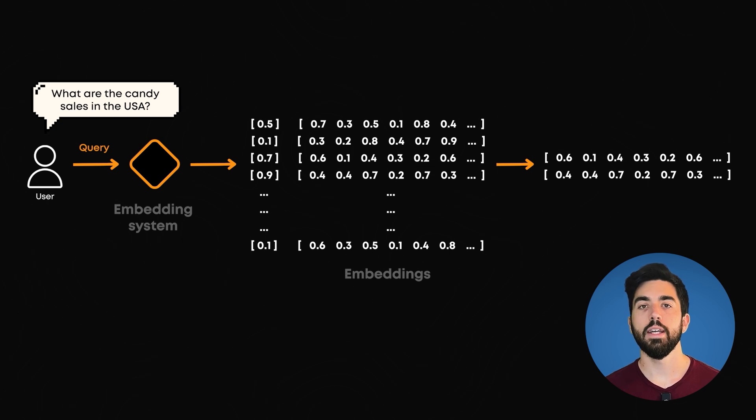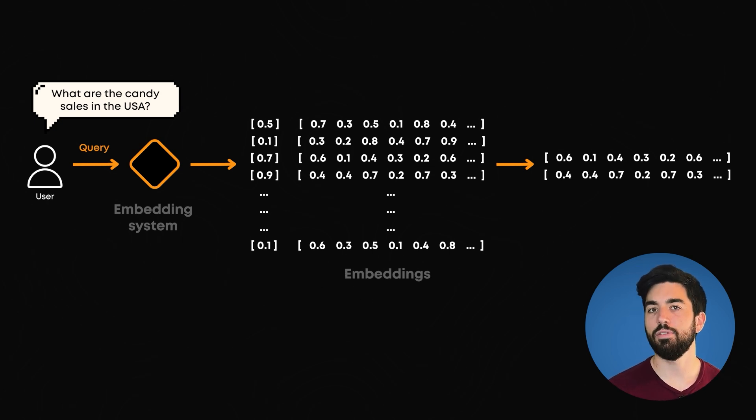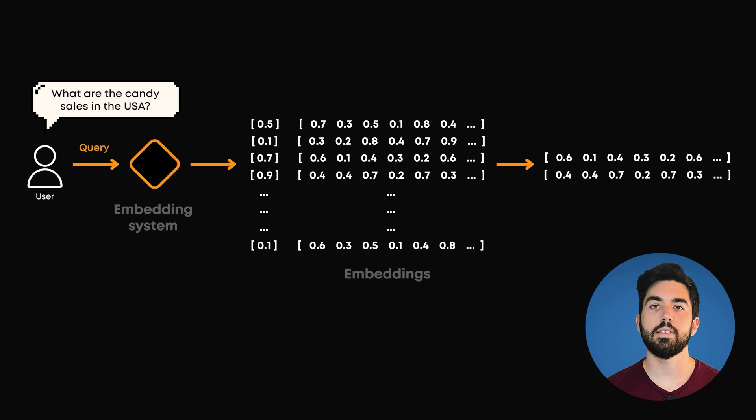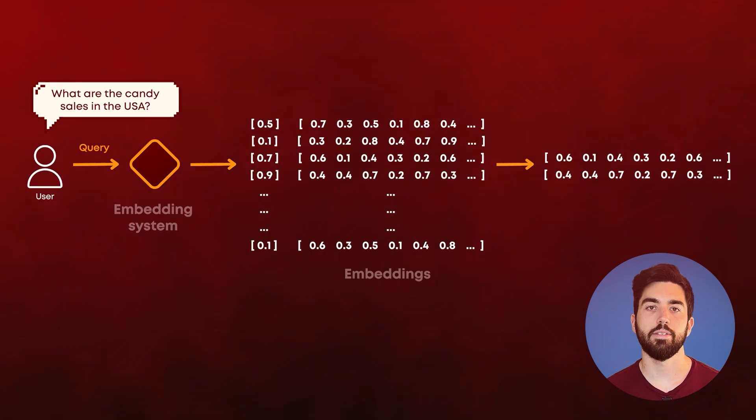In short, in a vector database, we use the content itself — the semantic search — to get similar content. But we still have the volume problem.